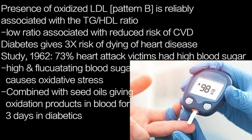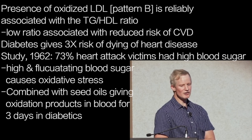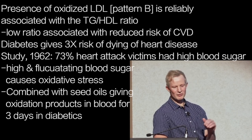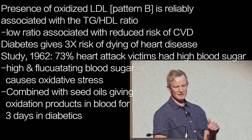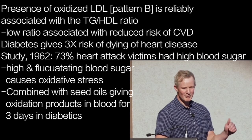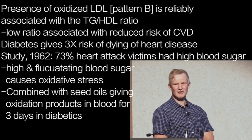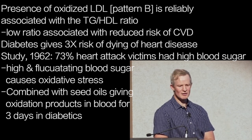Both high and especially fluctuating blood glucose levels generate oxidative stress at the level of the mitochondria, the consequences of which are compounded when combined with seed oil consumption — with oxidation products detectable in the blood for three days in diabetics. This is a very good reason to keep your blood glucose level in check.